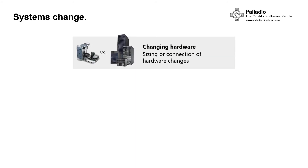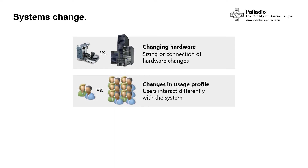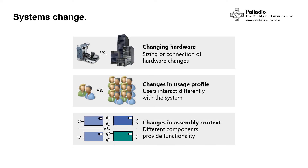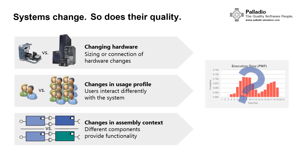We have now seen one use case where we wanted to assess different alternatives for the design of the system. But systems also change over time — for example, the sizing or connection of hardware can change, the usage of a system can change when users interact differently, or the assembly context can change when different components are used to provide equivalent or similar functionality. These are also cases where we want to assess the changing quality of the system and can use Palladio to do that.